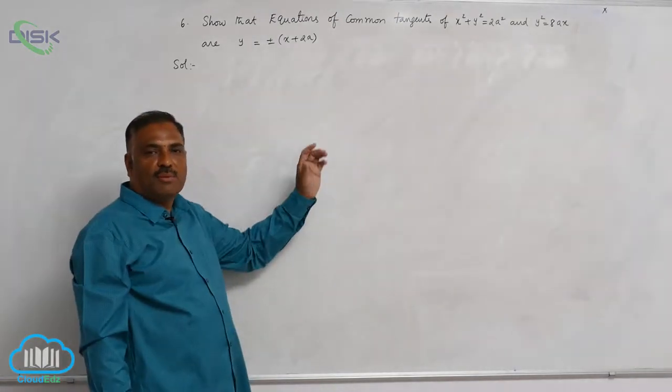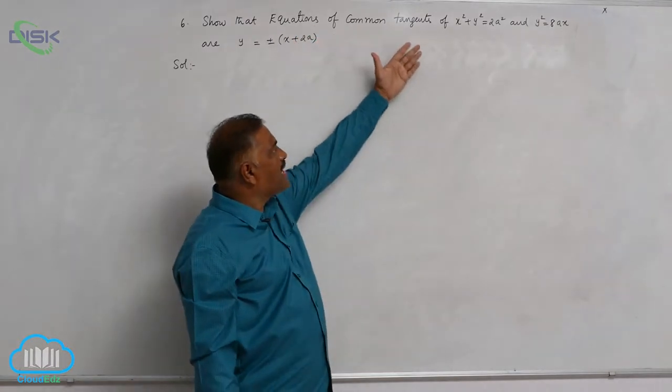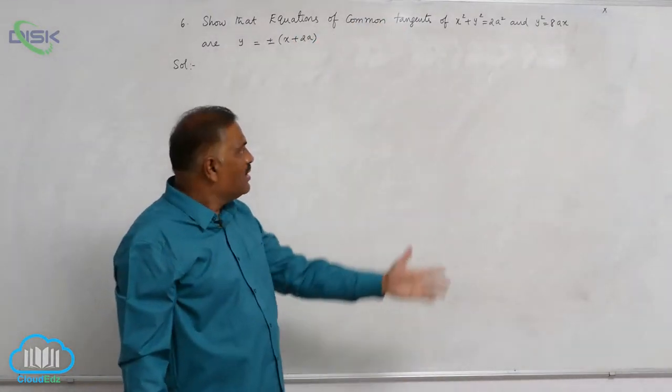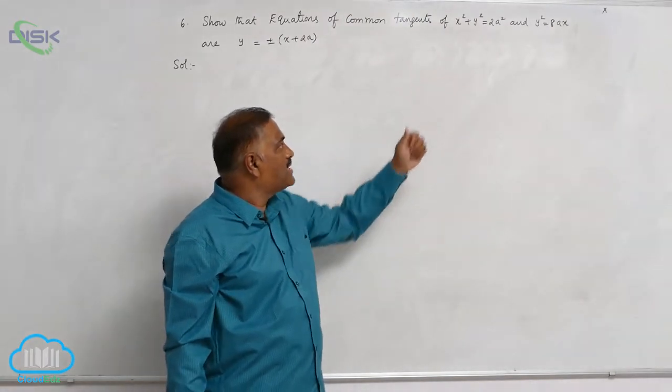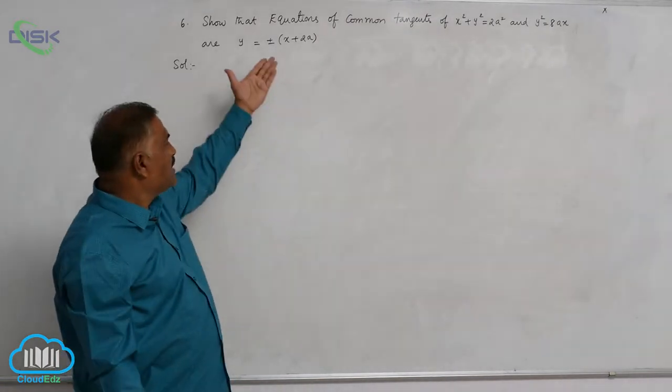We will discuss an important problem of this chapter. Show that equations of common tangents of x square plus y square equal to 2a square and y square equal to 4ax are given by y is equal to plus or minus x plus 2a.